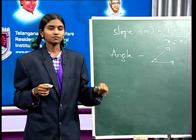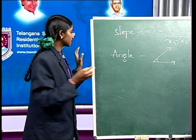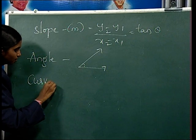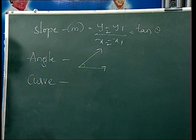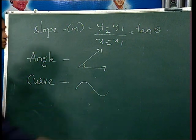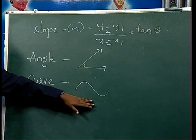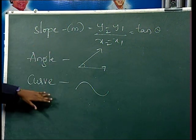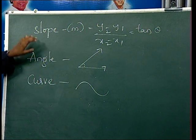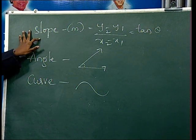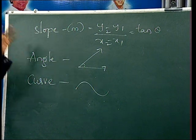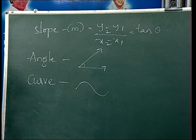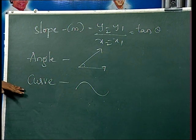Coming to curve — curve is nothing but a continuously bending line without angle is known as a curve. So these are the basic concepts which we have learnt in our earlier classes: slope, angle, and also curve. Slope tells how steep a line is or how much y increases as x increases, and it is constant everywhere on the line.